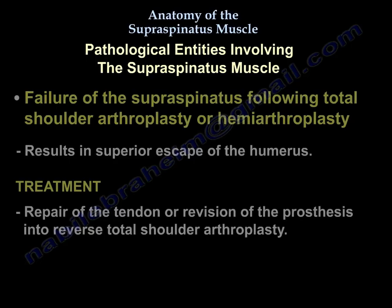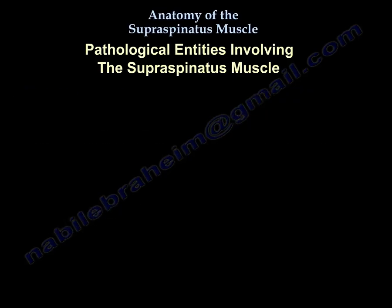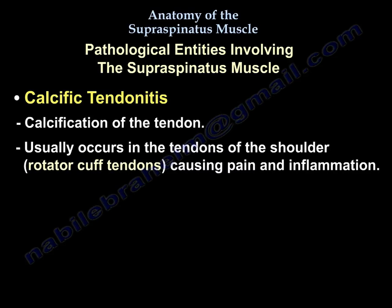Another entity is failure of the supraspinatus following total shoulder arthroplasty or hemiarthroplasty, which results in superior escape of the humerus. Treatment involves either repairing the tendon or revising the prosthesis to a reverse total shoulder arthroplasty. The last entity is calcific tendonitis — calcification of the tendon — which typically occurs in the rotator cuff tendons of the shoulder, causing pain and inflammation.